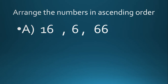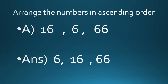The next question is: arrange 16, 6, and 66 in ascending order. First rule — check the digits. 6 is a single-digit number, so it is the smallest. The two-digit numbers are 16 and 66. Then we check the tens place: 16 has 1 on the tens place and 66 has 6 on the tens place. Since 6 is bigger than 1, 66 is the biggest number. So the arrangement is: 6, 16, and 66.